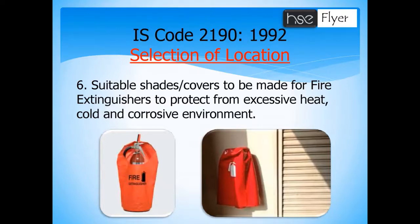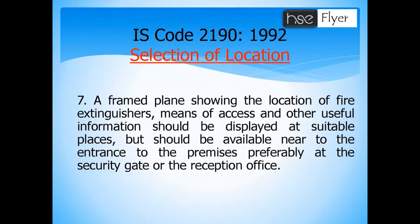If we are keeping a fire extinguisher in an open location, proper shading should be given to protect it from direct sunlight, and proper protection should be given from corrosive environments. Finally, proper identification of fire extinguishers should be done at all locations. A floor plan showing the location of fire extinguishers, means of access, and other user information should be displayed at suitable locations — preferably at the security gate or reception office — for easy identification and quick access in the event of a fire.